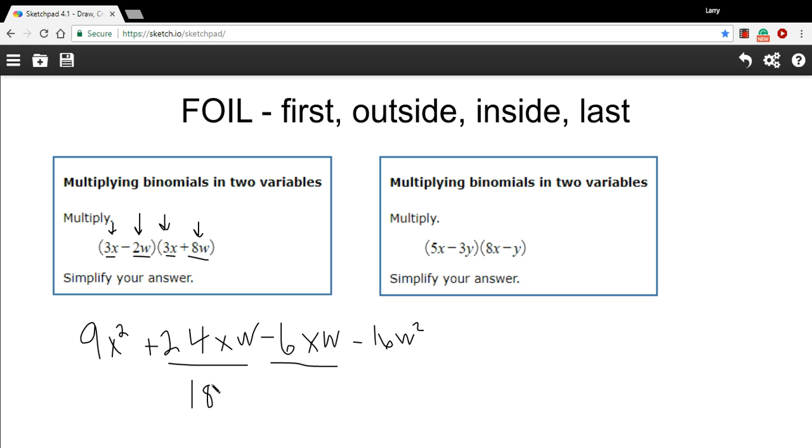You can write this as xw or wx. I'm going to write it as wx, because usually people like to write them in alphabetical order when you have a choice. And then we have our 9x squared, and we have our minus 16w squared.